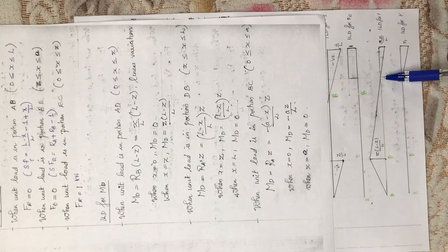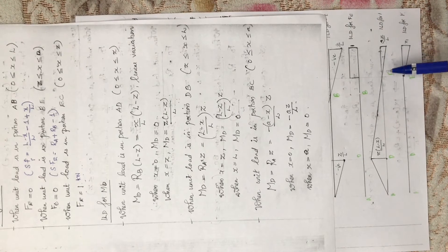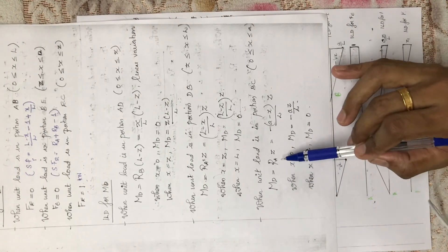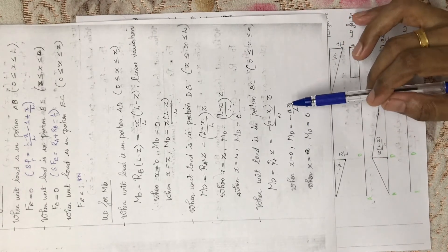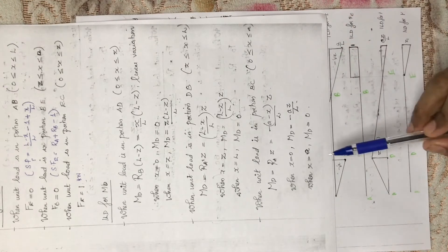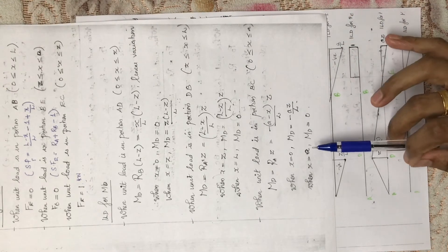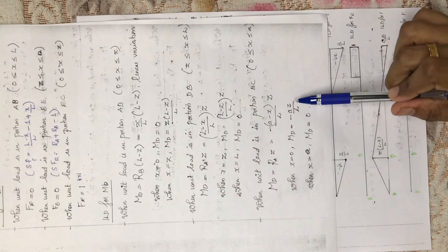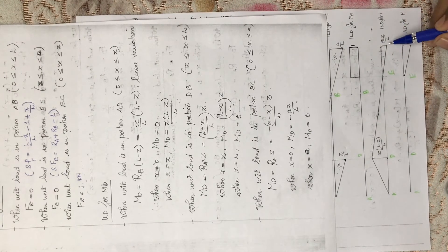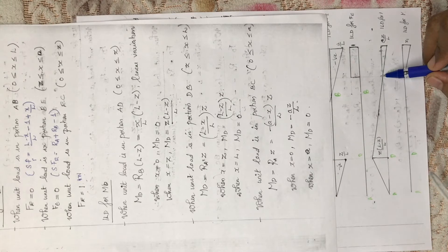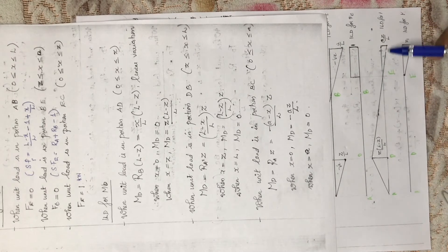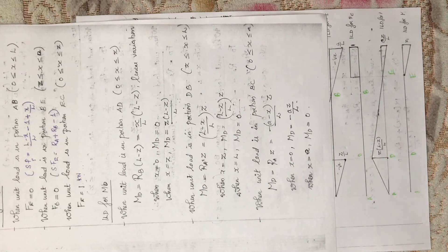Now consider the unit load in the last portion BC. From that we get Md equals Ra into z, which equals minus (a minus h)/l into z. When h equals zero, Md equals minus a·z/l, so at this point the value is a·z/l. When h equals a, Md equals zero. This gives us the complete influence line diagram for the moment at D.